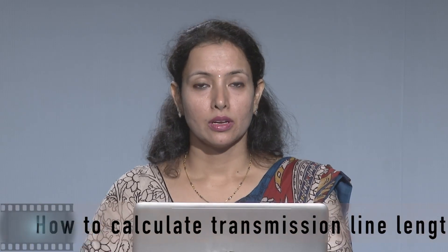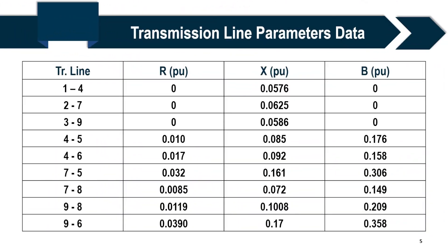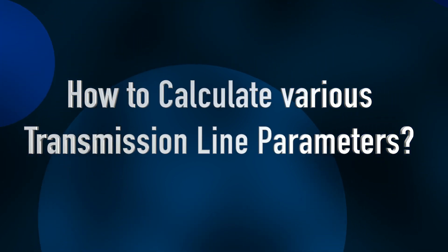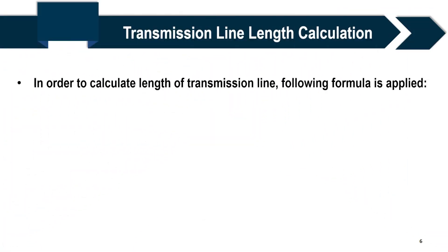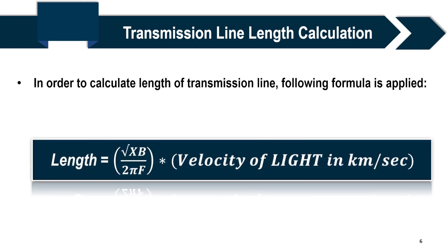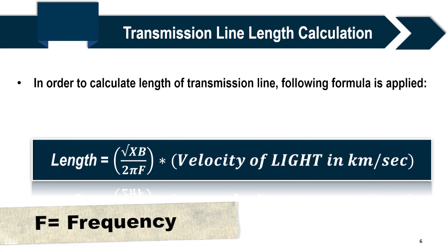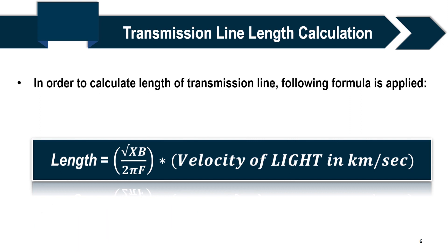The various parameters we must consider start with how to calculate the transmission line length. If you see the data sheet of a transmission line, you will find values of resistance, inductive reactance, and susceptance — all given in per unit. For our MATLAB modeling, we need to calculate the actual values of resistance, inductance, and capacitance from these per unit values. The length is given by the square root of inductive reactance multiplied by the susceptance, divided by 2πf, then multiplied by the velocity of light in kilometers per second.